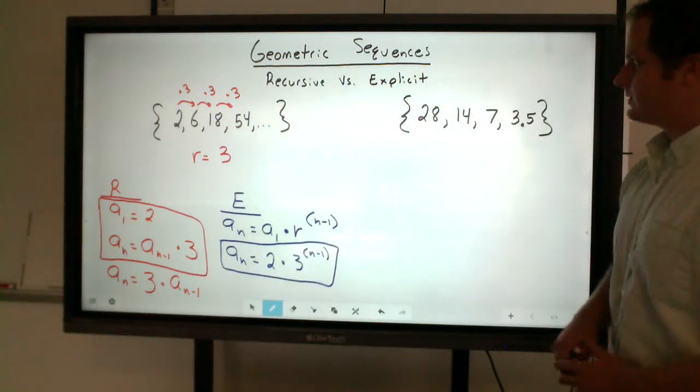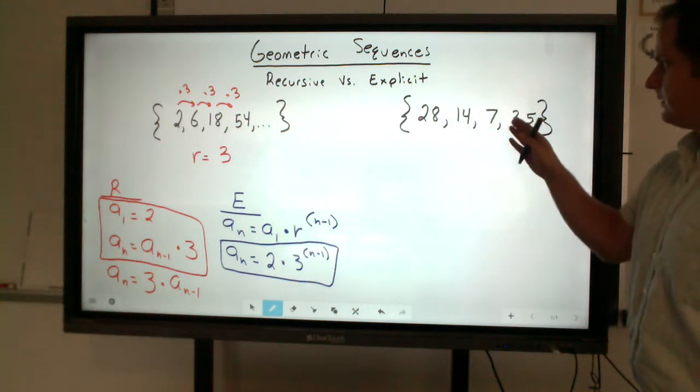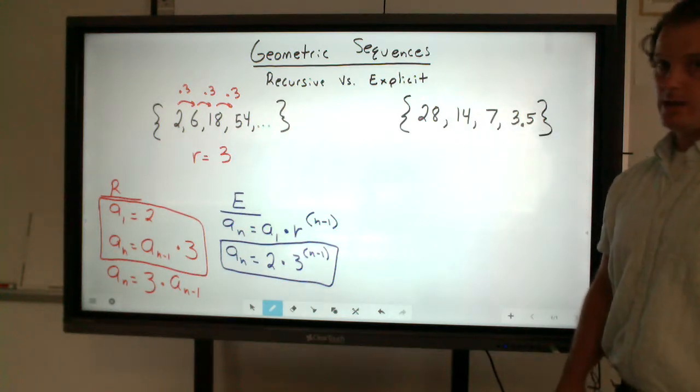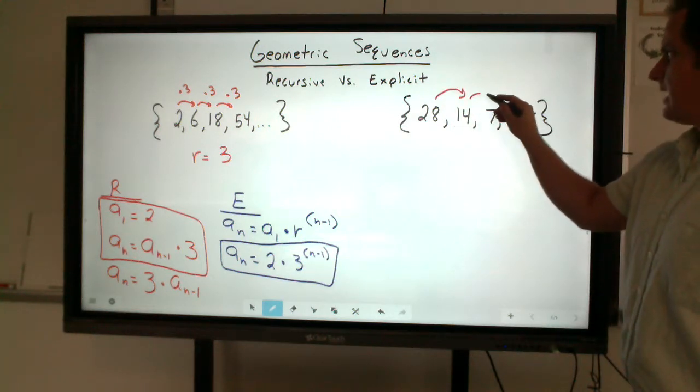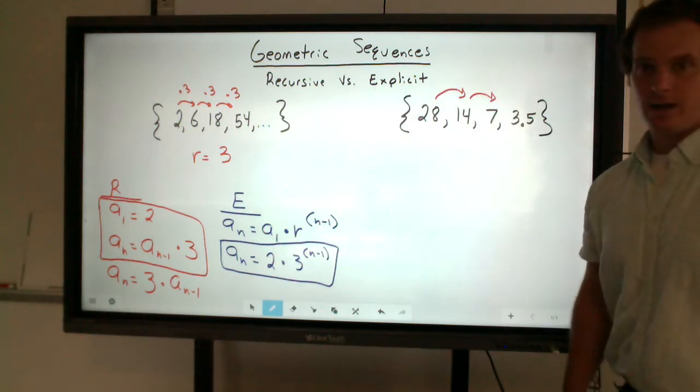Let's look at this other example. So the other example, you're going to notice, we have 28, 14, 7, and then 3.5. There is no common difference, but there is a common ratio. And sometimes my students will say, it looks like it's dividing by 2.